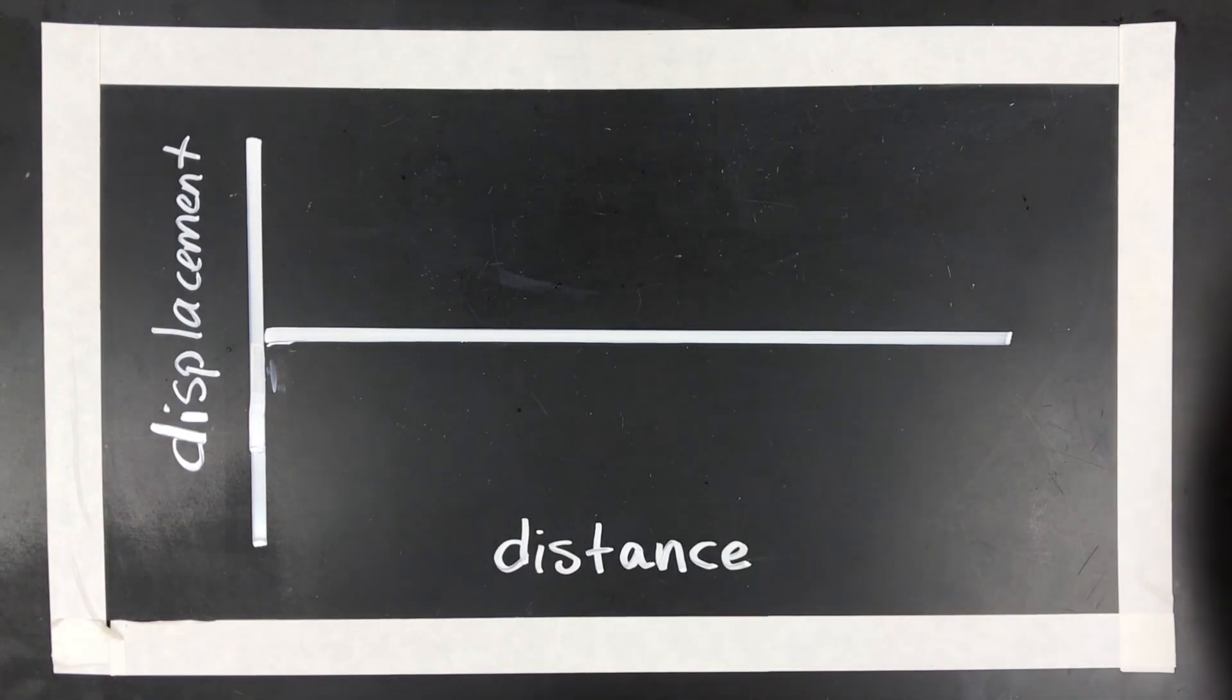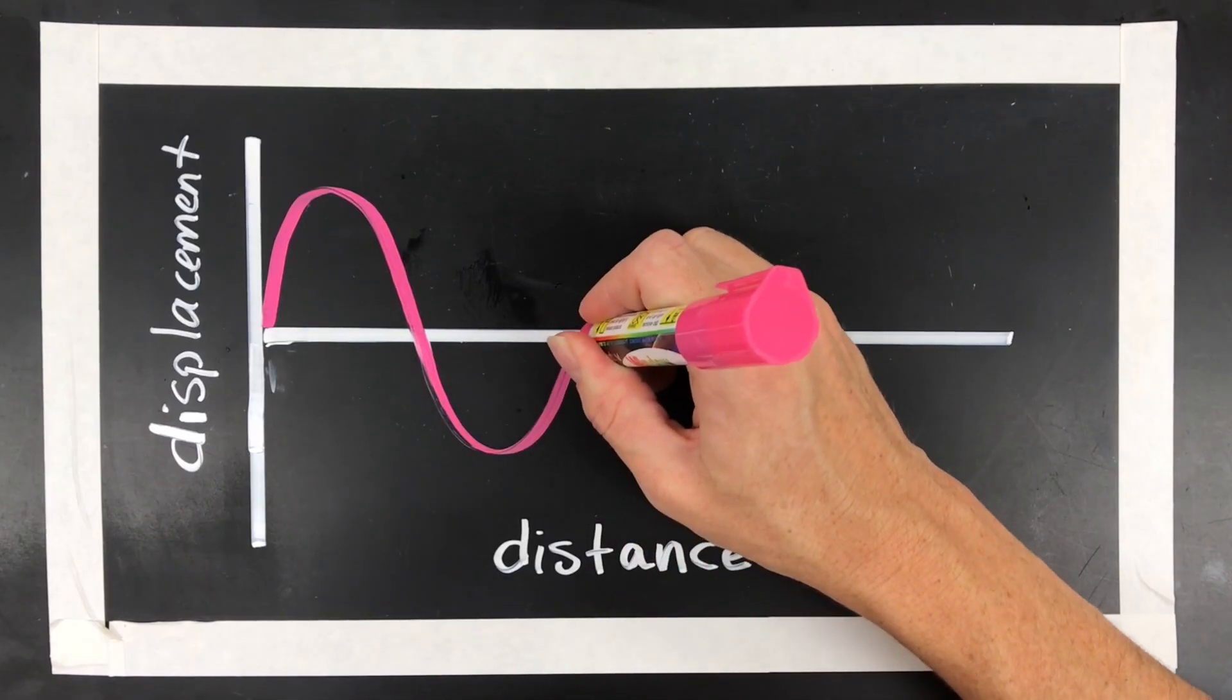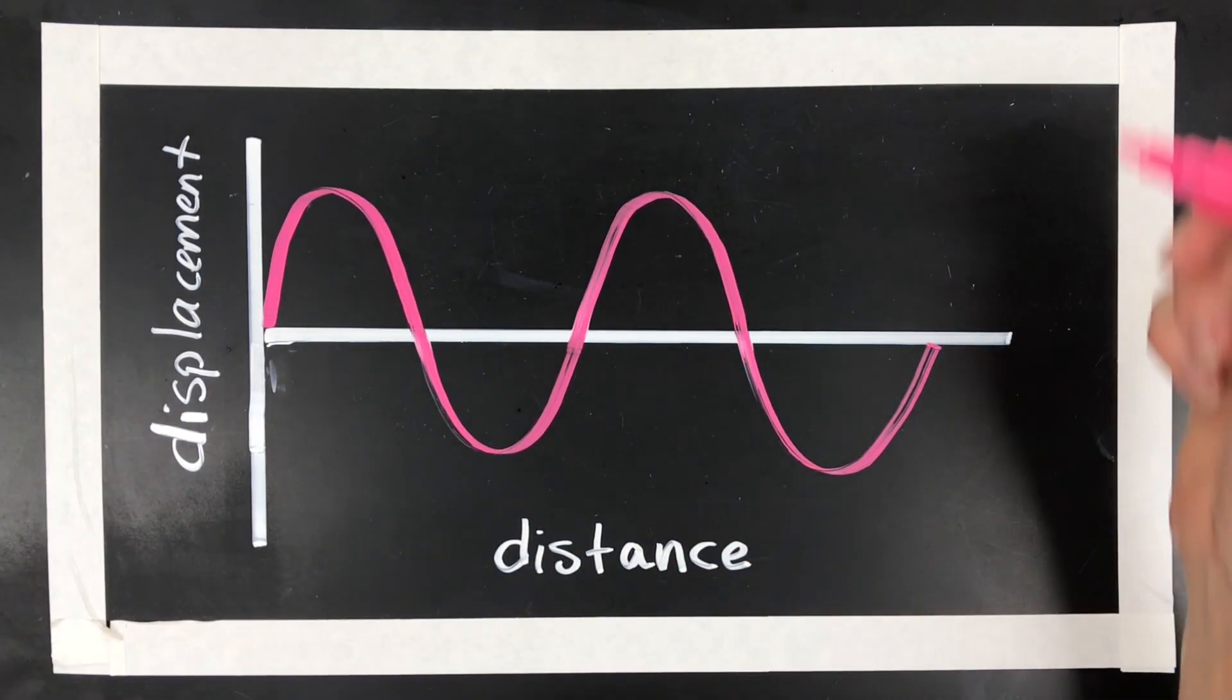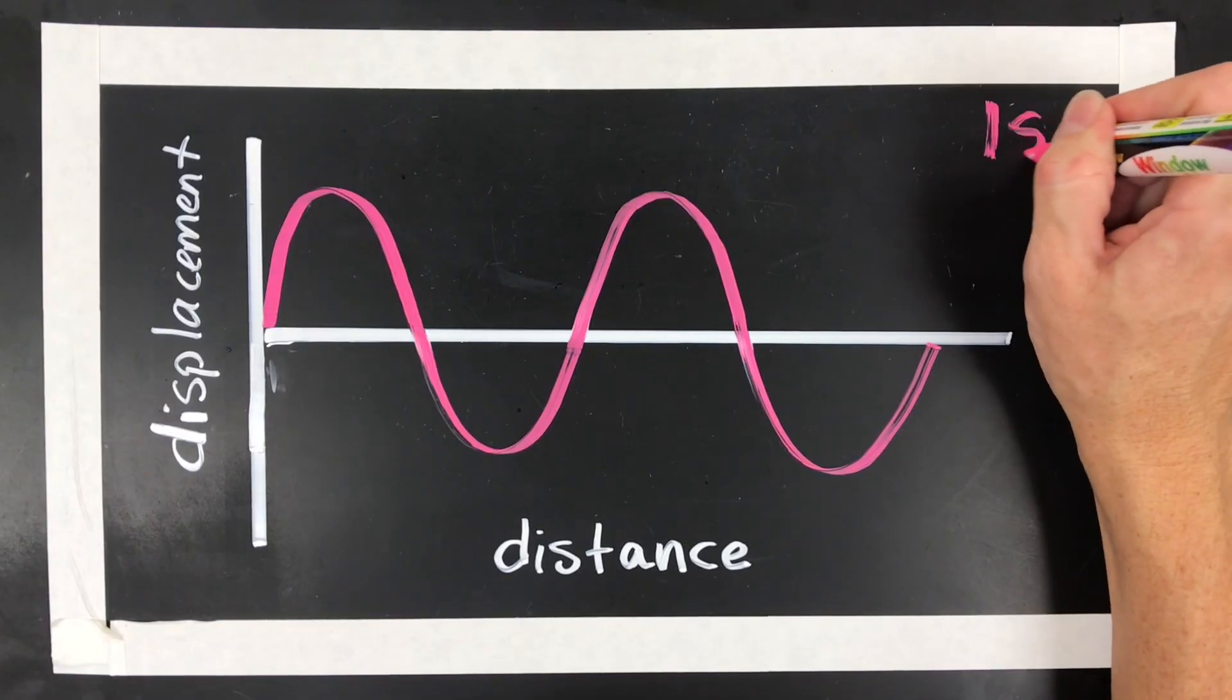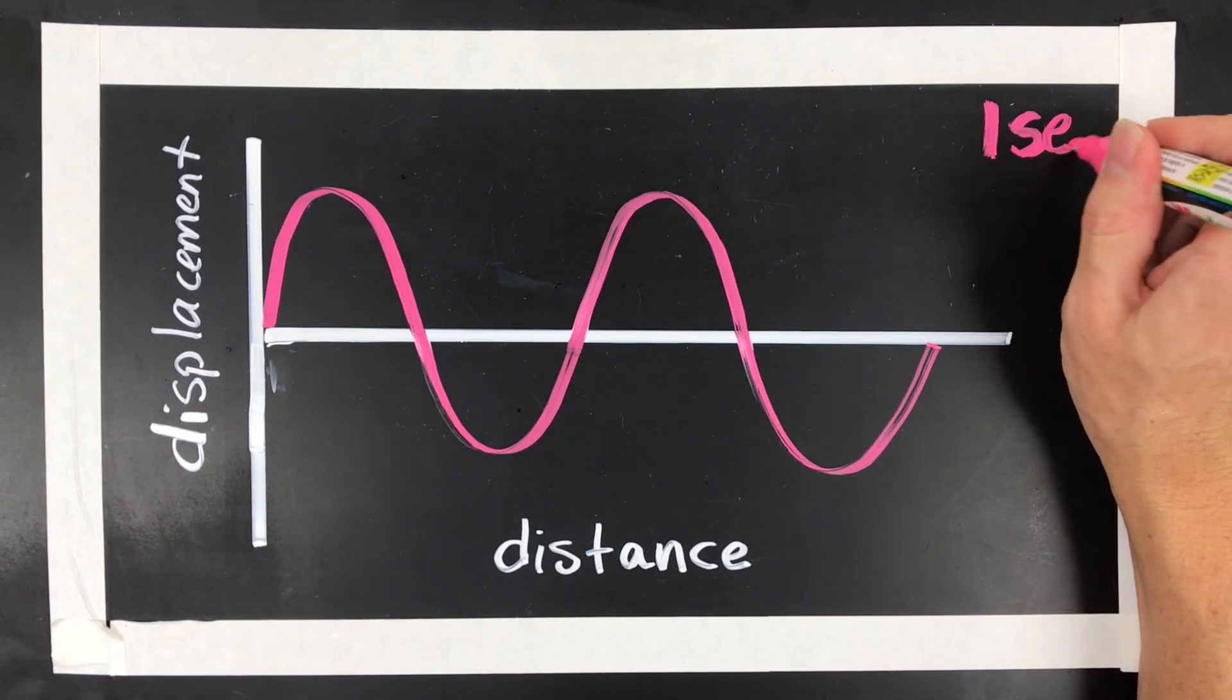Next I'm going to just give it a shot and draw a wave. So I'm going to go up, back down, hit that point again, and try to make it look the same and back up. And let's say that that took one second to happen. That's going to help us with frequency. So one second.